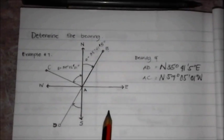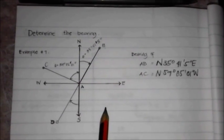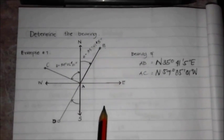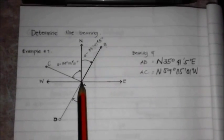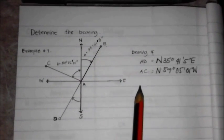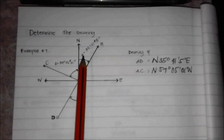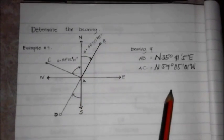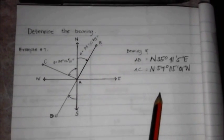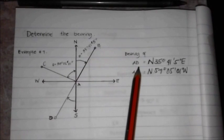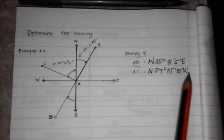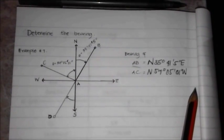In this moment, we will now determine the bearing of this quadrantal system. As we can see, the line AD in the northeast quadrant has an angle of 35 degrees, 41 minutes and 5 seconds. Therefore, the bearing of line AD is north 35 degrees, 41 minutes and 5 seconds east.